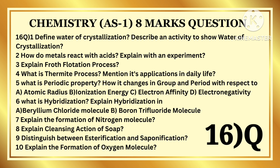What is periodic property? How does it change in a group and in a period with respect to atomic radius, ionization energy, electron affinity, and electronegativity? Explain how atomic radius, ionization energy, electron affinity, and electronegativity vary across groups and periods.